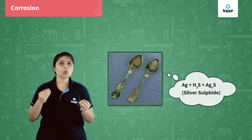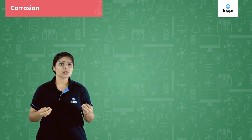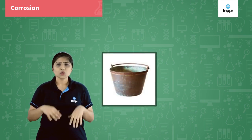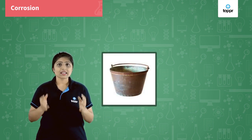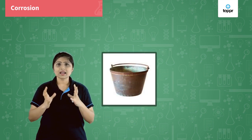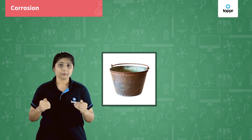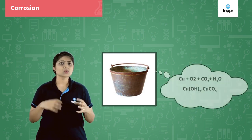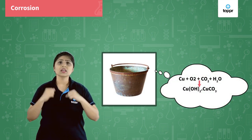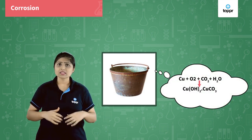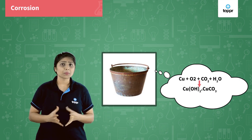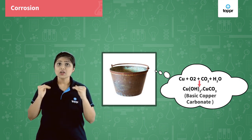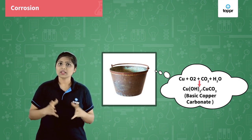You also must have observed a copper vessel which gets a green colored layer on it after some time. That is because it reacts with oxygen, carbon dioxide, and water vapor in air, and it forms basic copper carbonate on it.